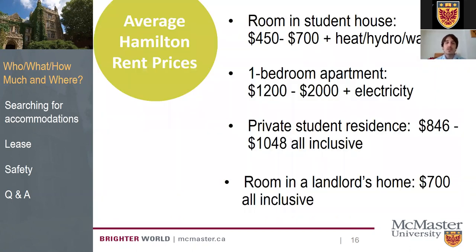In terms of rental prices: student houses are at the cheaper end — $450 to $700 per person per room. A one-bedroom apartment ranges widely, from $1,200 to $2,000 per month. Private student residences fall in between — more expensive than a student house but a bit less than a one-bedroom apartment. A room in a landlord's house averages around $700 per month.